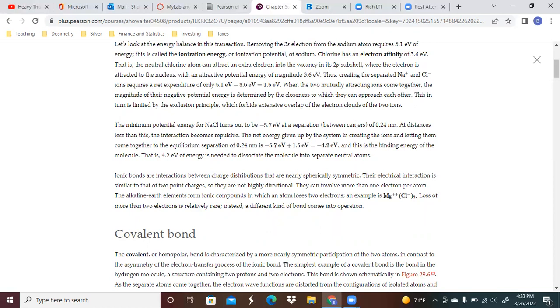When the two mutually attracting ions come together, the magnitude of their negative potential energy is determined by the closeness to which they can approach each other. This in turn is limited by the exclusion principle, which forbids extensive overlap of the electron clouds of the two ions.